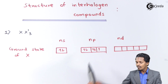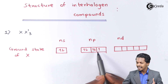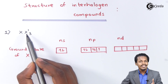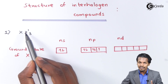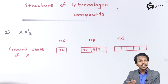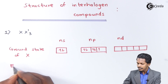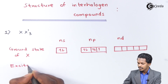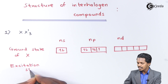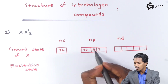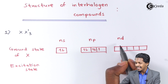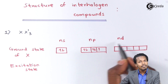Since we need 3 unpaired electrons to accommodate the three X' atoms, we have to excite the central atom. In the excitation state, one of the electrons moves towards the empty d orbital.